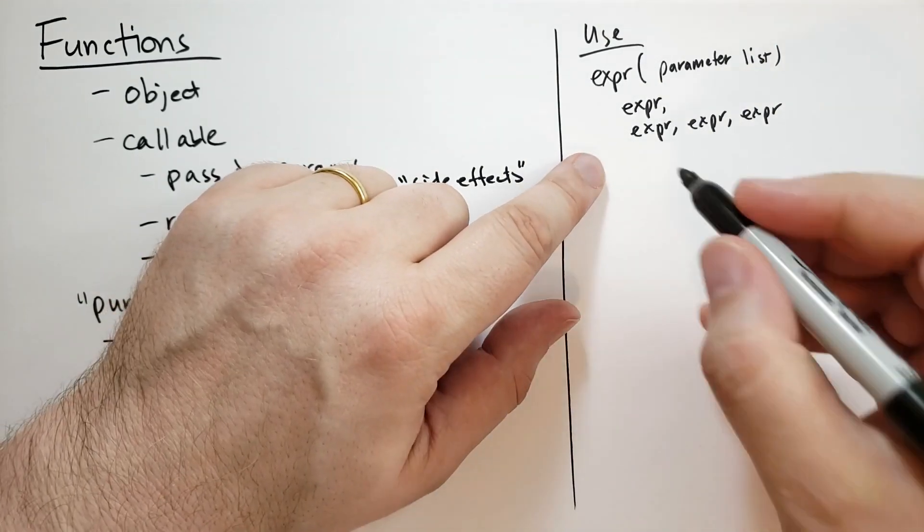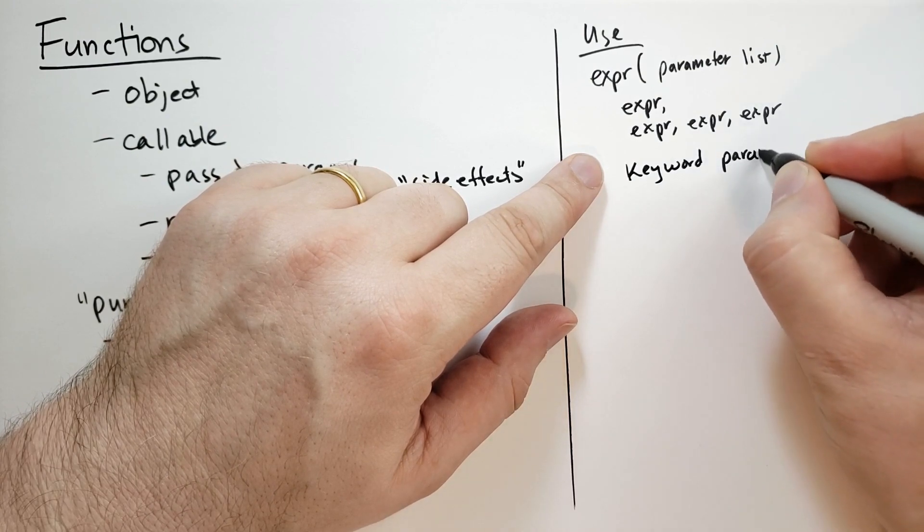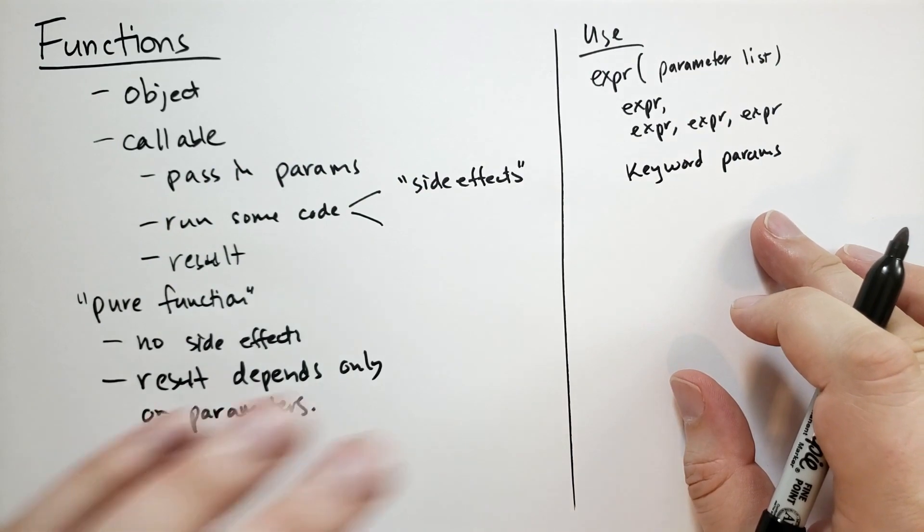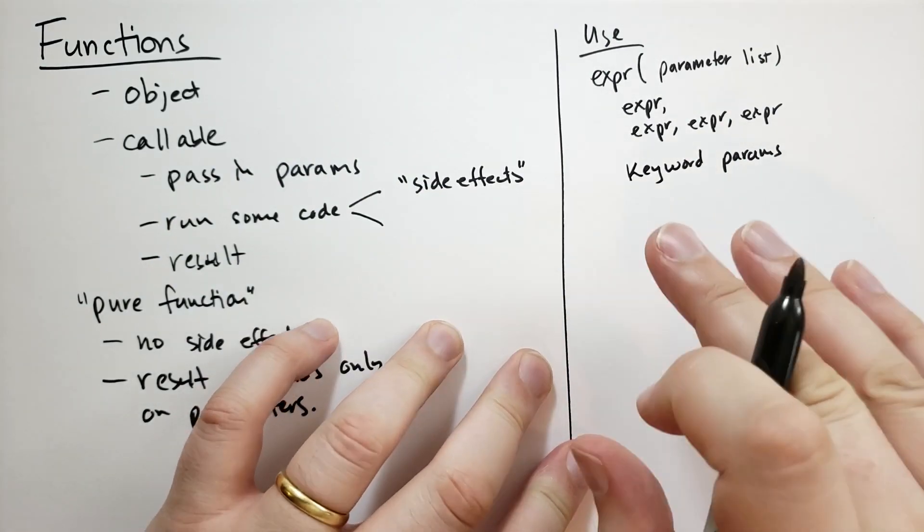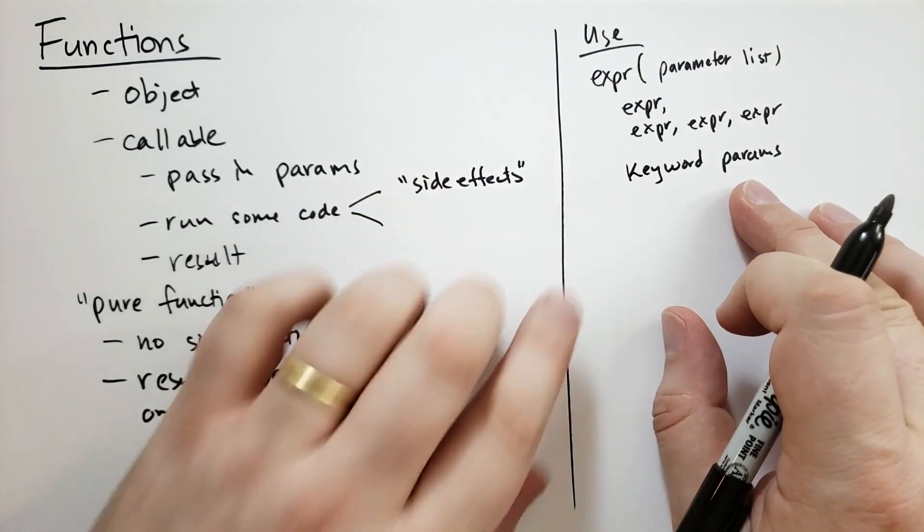There is actually something called keyword parameters that we're not going to cover yet. We'll cover that as we get into a more serious definition of functions, including dictionaries and sequences and stuff like that. But I just wanted to get a really early introduction to functions. We're not going to talk about the keyword parameters yet.